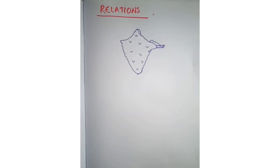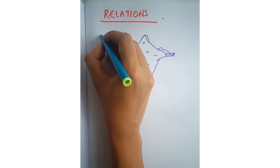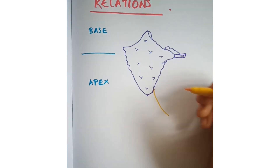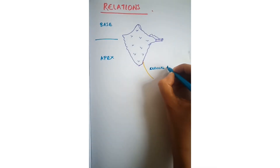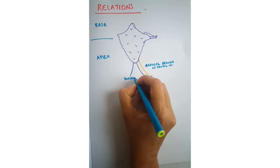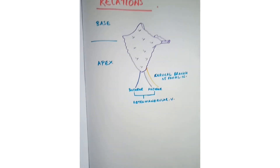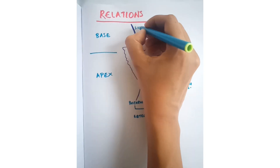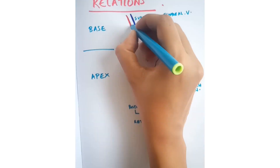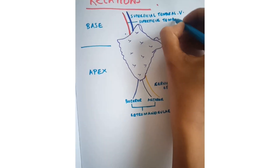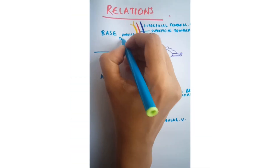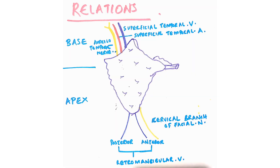Coming to the relations of the parotid gland, consider the gland as an inverted triangle with the apex facing downwards. Structures in the apex portion include the cervical branch of the facial nerve and the anterior and posterior divisions of the retromandibular vein. In the superior surface or base there are superficial temporal vein and arteries and the auriculotemporal nerve.